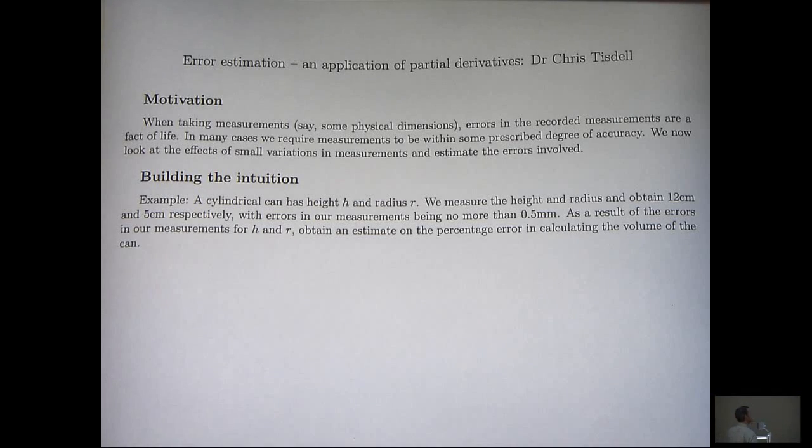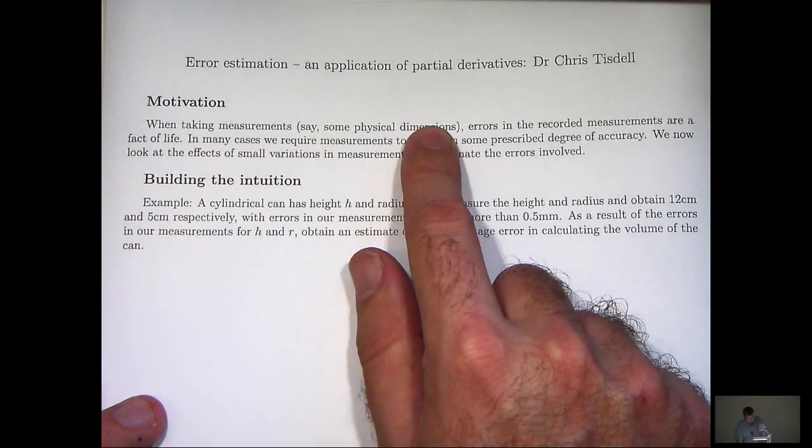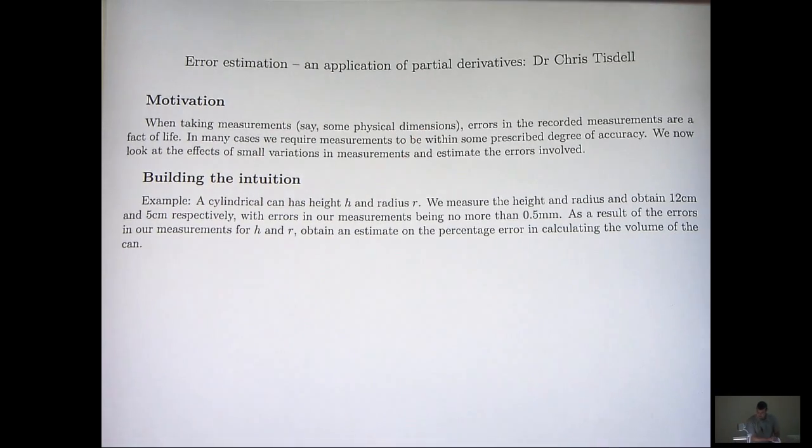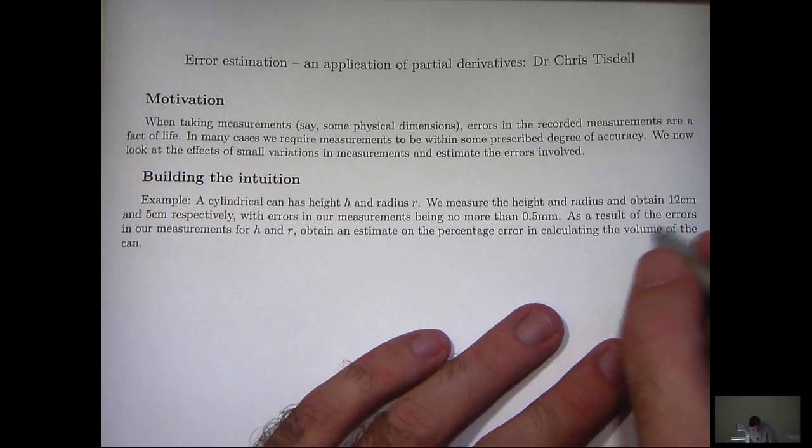Let's motivate the ideas. When we take measurements, say some physical dimensions, errors in our recorded measurements are pretty much unavoidable. In many cases what we're after is to obtain measurements to be within some prescribed degree of accuracy. This video is going to look at the effects that those small variations, those small errors in measurements have in certain calculations.